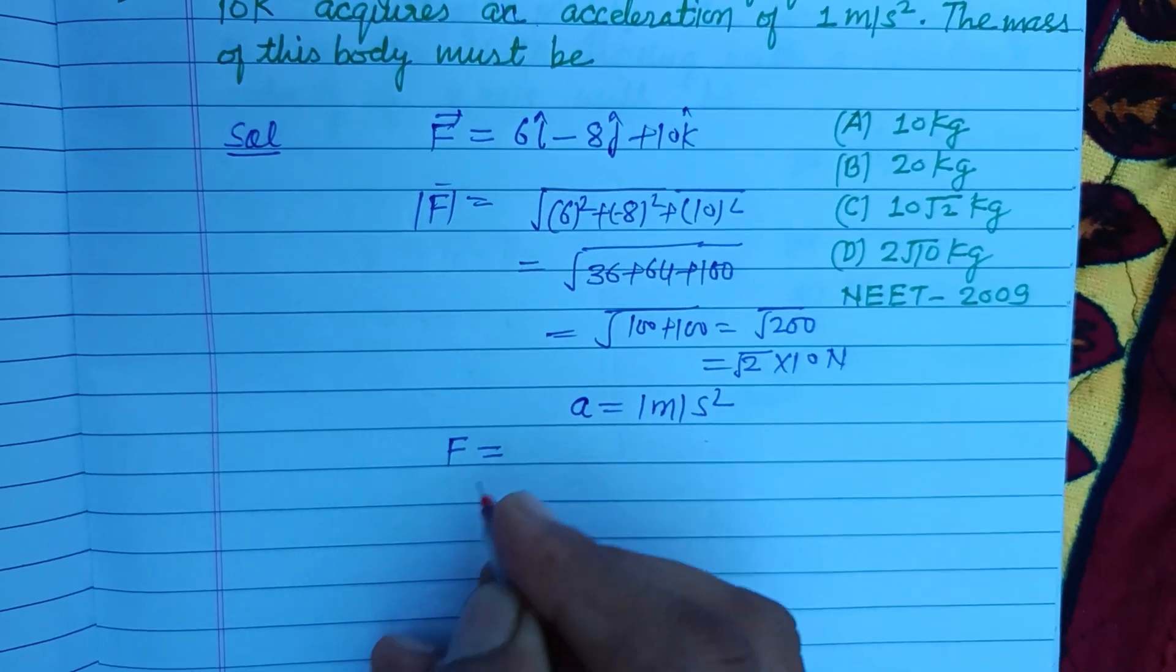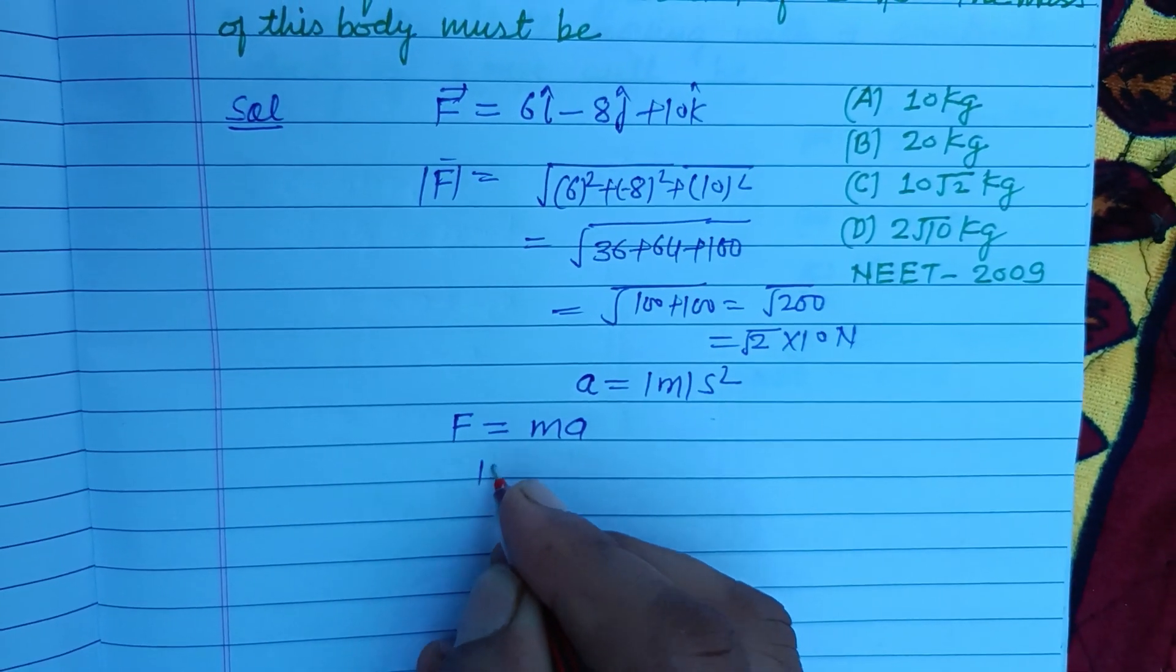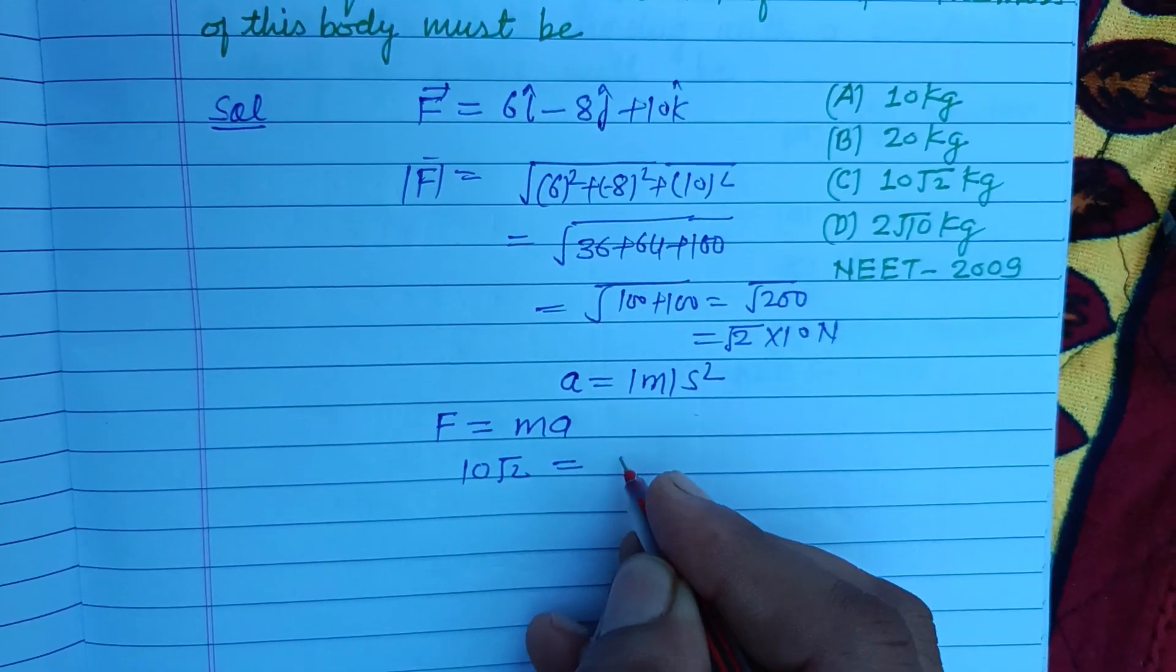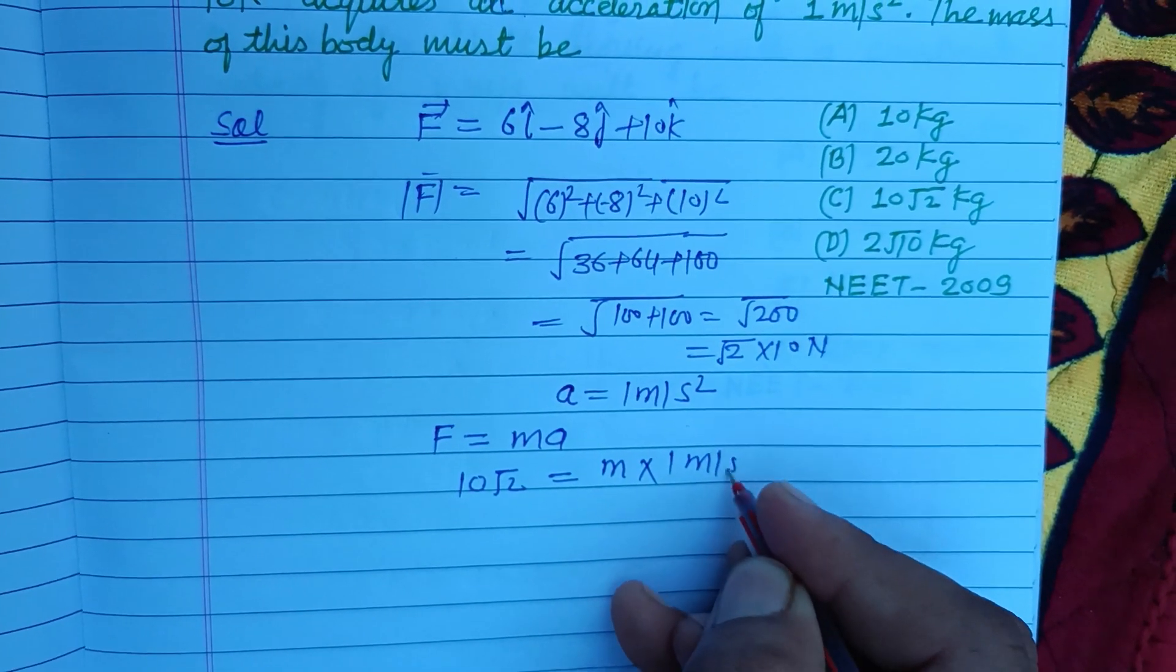Using second law of motion, F equals ma. F is 10 root 2, mass is required, and a is 1 meter per second squared.